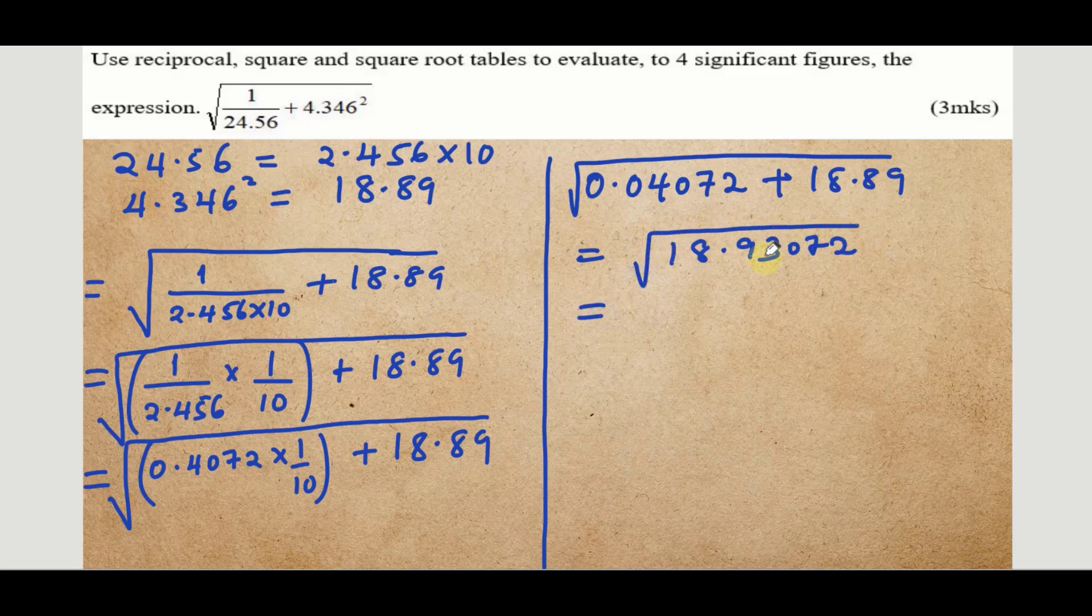From here you'll use the tables of square root to get these. The first thing you're going to do is to write this number correct to 4 significant figures, which will give you 18.93. Then reading directly the square root of this number from the table, you'll get 4.351, and that is the solution.